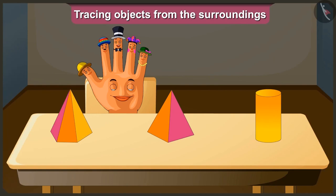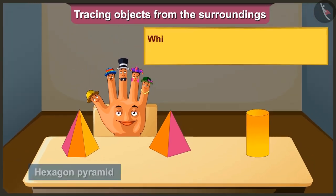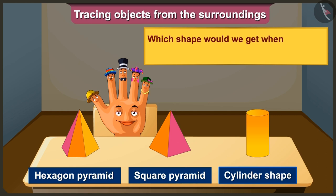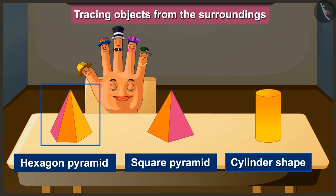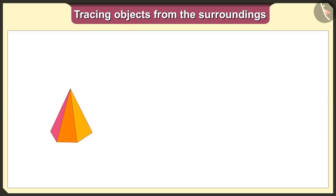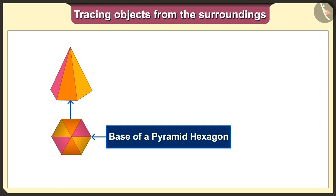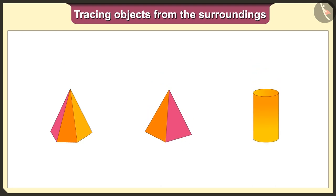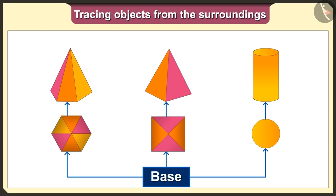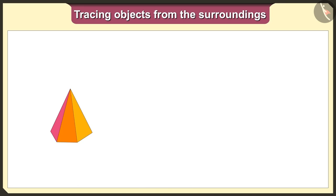Friends, did you practice tracing objects? So now tell me, which shape would we get when we trace these solid shaped blocks? First of all, we will keep a hexagon pyramid on a paper and trace it. The base of this hexagon pyramid is a hexagon. When we trace any object, the shape we get will be the same as the base.